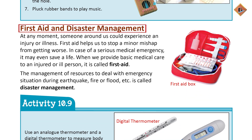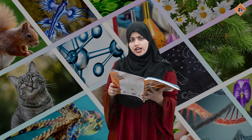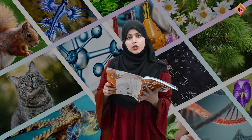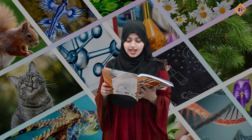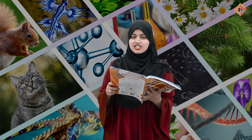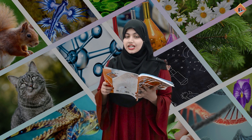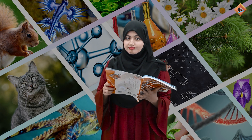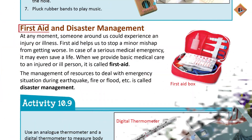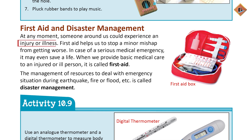Ab main aapko first aid aur disaster management ke baare mein bataati hoon. Aapko pata hai agar aapko cut lag jaata hai to aapki mama ne ek box banaya hota hai jiske andar cotton hoti hai, pyodine hoti hai, aur bahut saari medicines hoti hain, chhoti si scissor hoti hai aur bandage maujood hoti hai. Is box ko kehte hain first aid box. At any moment someone around us could experience an injury or illness.